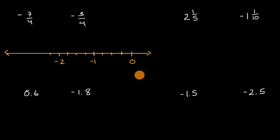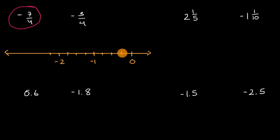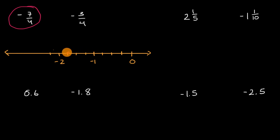And that's enough for us, but I could keep going if I liked. Now, where is negative seven fourths on this number line? Well, each of these is a fourth. So negative one fourth, two fourths, three fourths, four fourths, five fourths, six fourths, seven fourths. So this right over here is negative seven fourths.